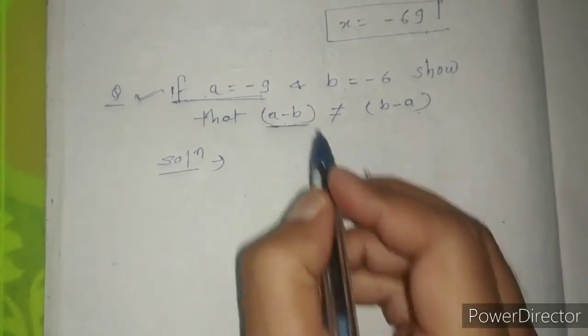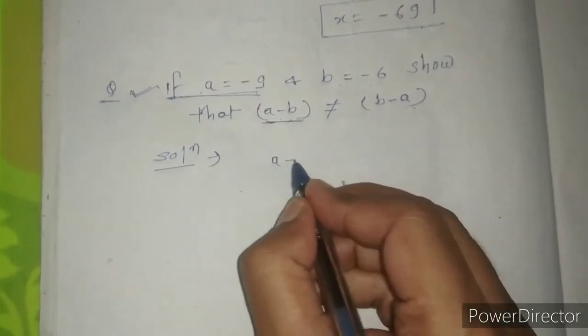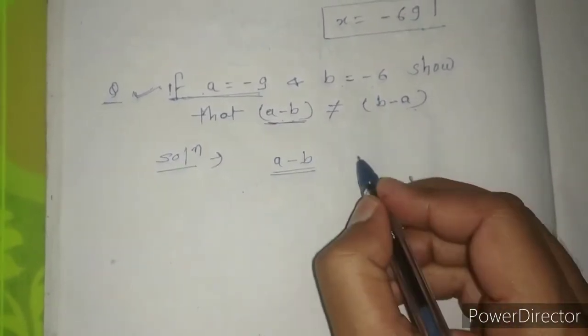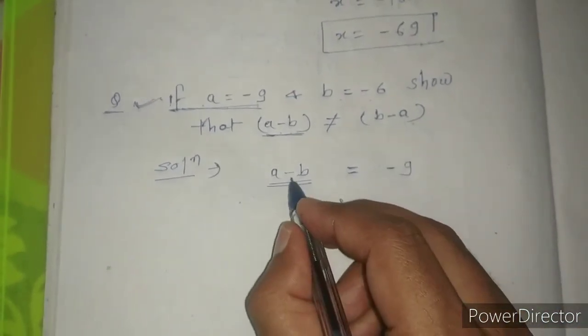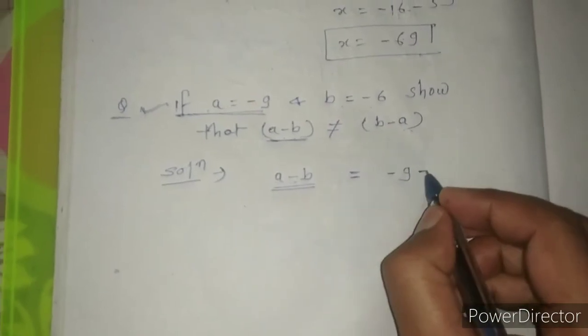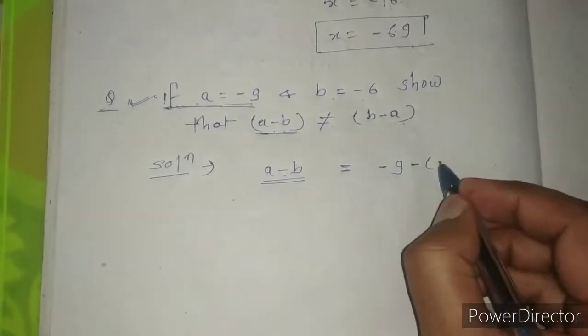First we'll find a minus b. The value of a is minus 9, and b is minus 6. So we have minus 9 minus, and since b is already minus, I have to put this minus sign. So a minus b equals minus 9 minus minus 6.